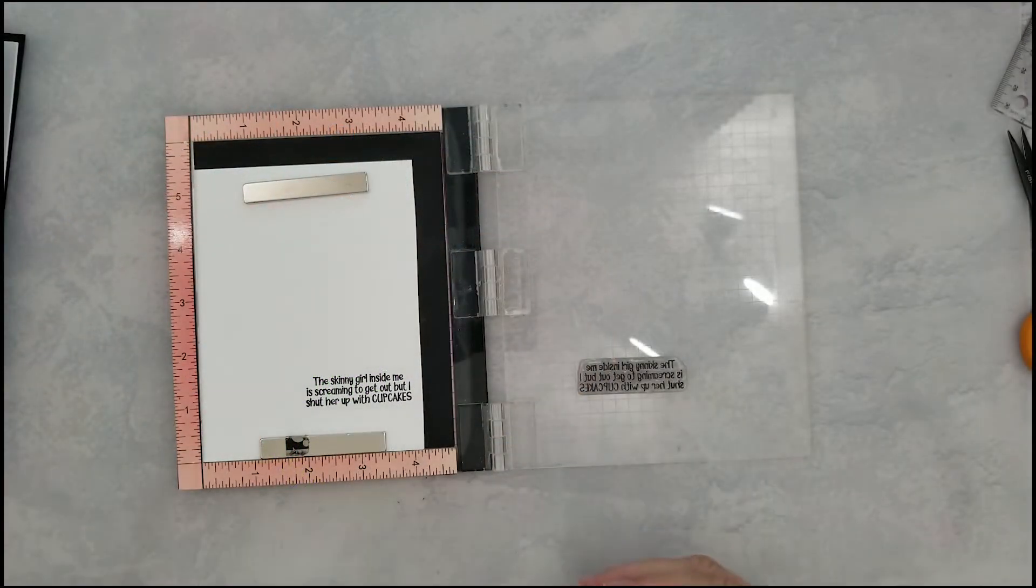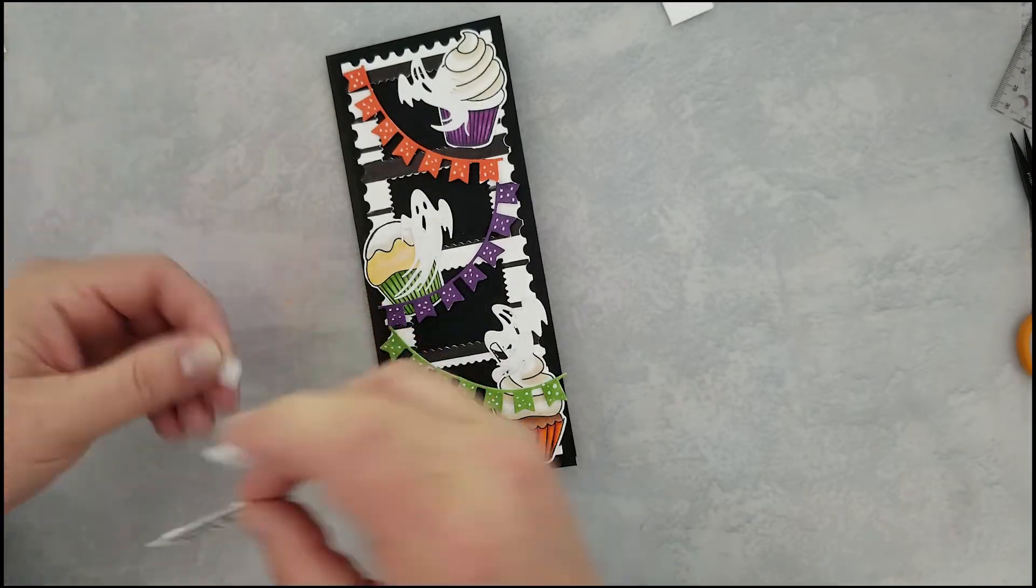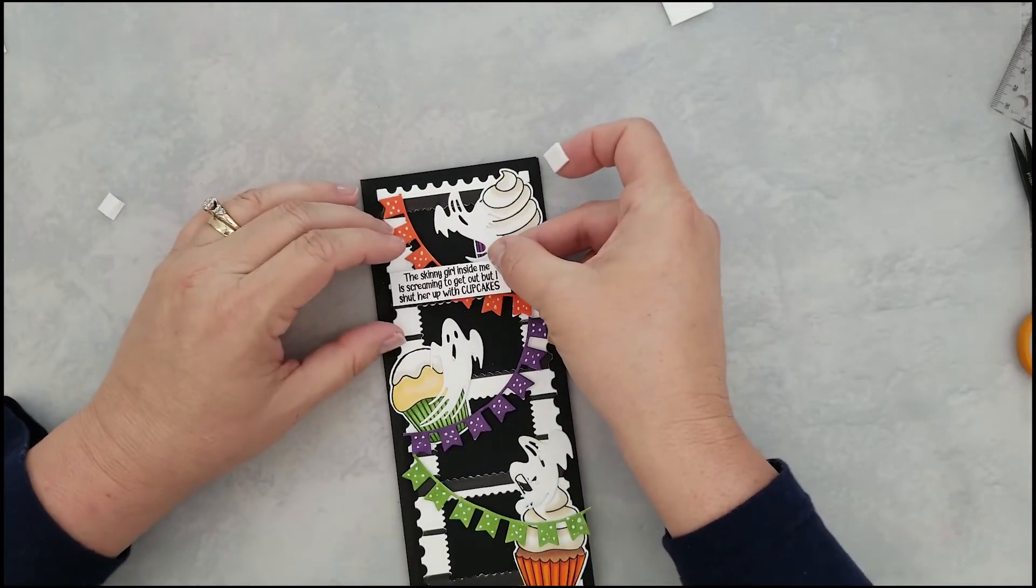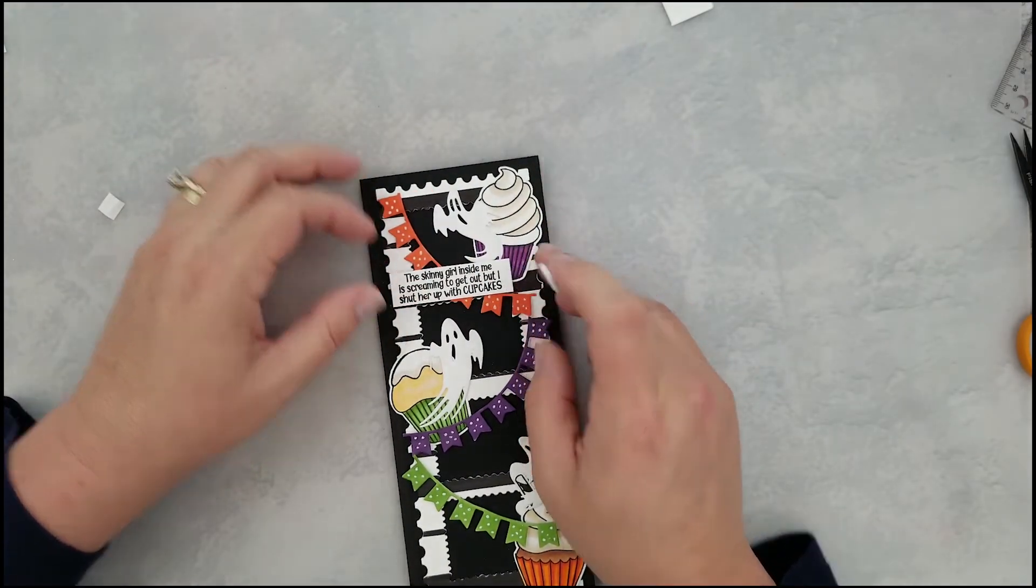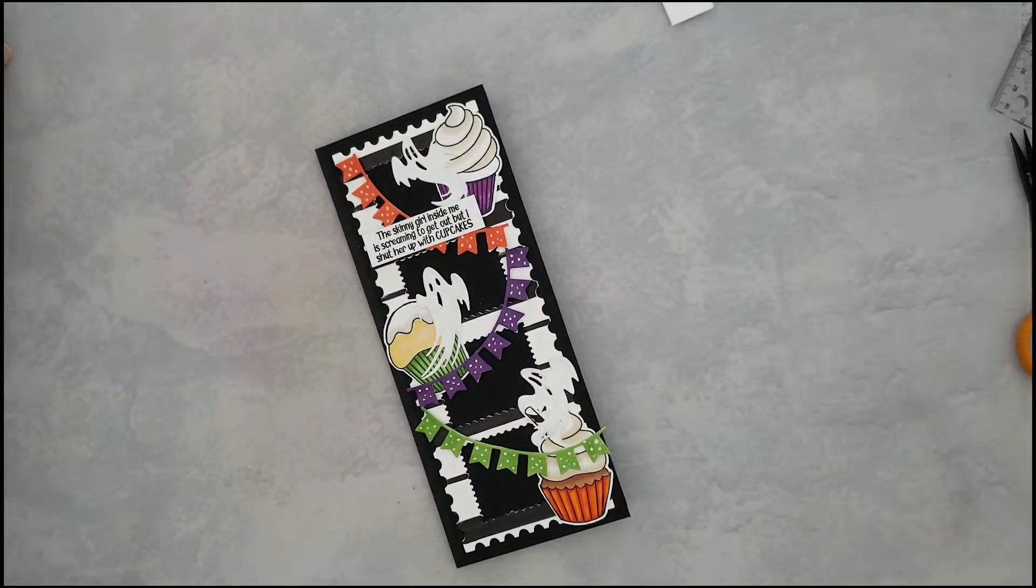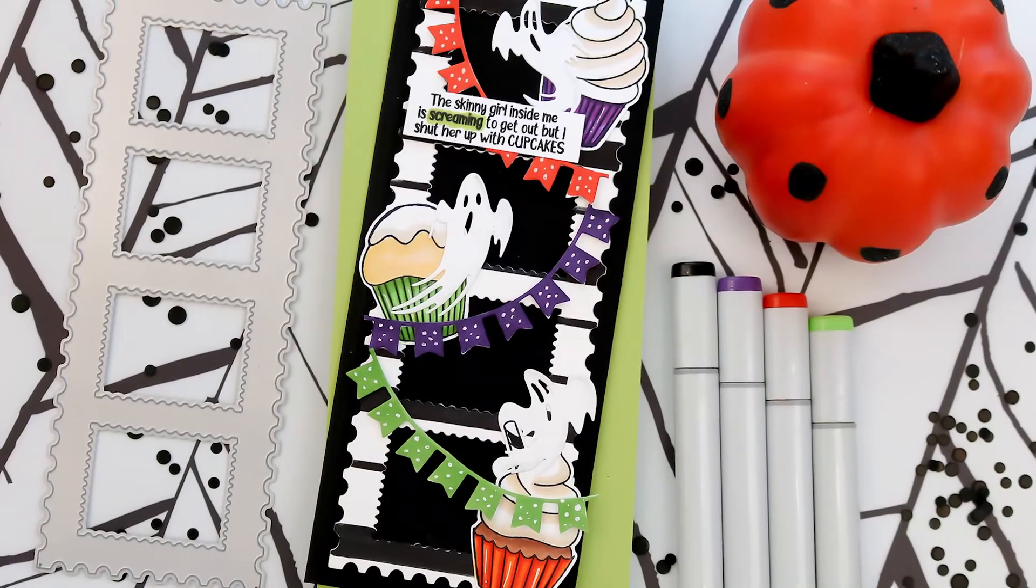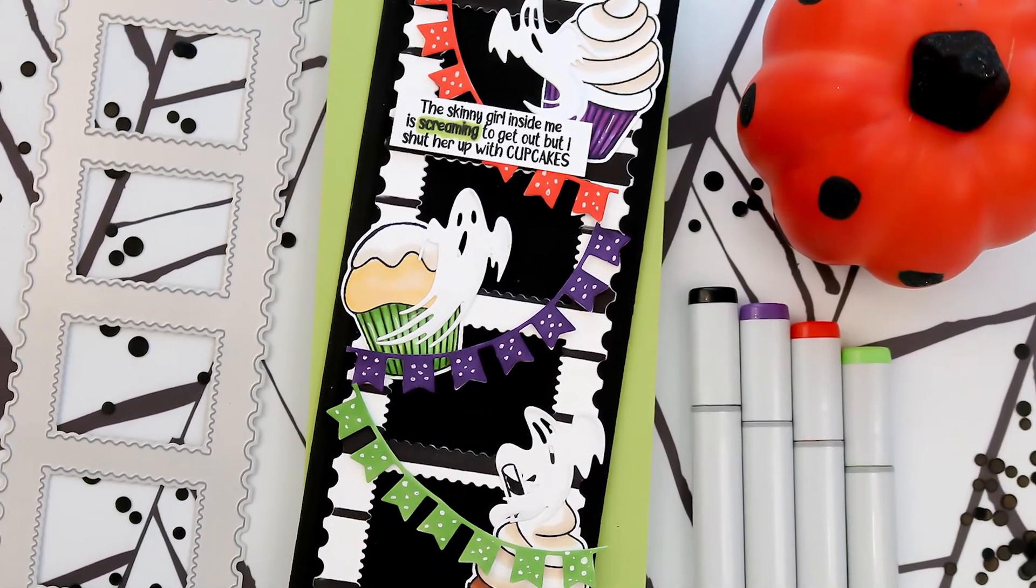The sentiment is from the Calories Schmallories stamp set and I thought it was perfect for this because it reads, 'The skinny girl inside of me is screaming to get out, but I shut her up with cupcakes.' I just thought that that was a lot of fun for my Halloween card, so I lightly went over the word 'screaming' with my green Copic marker just to highlight that.